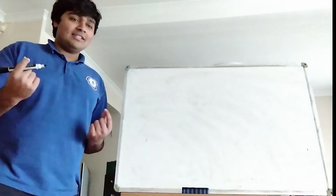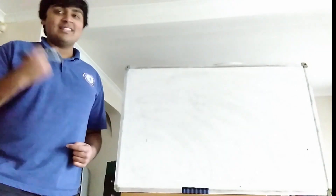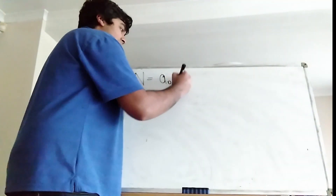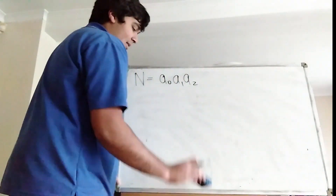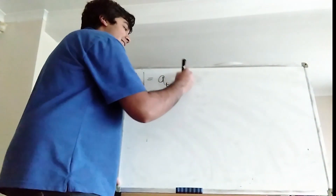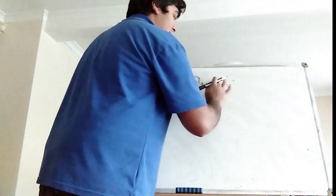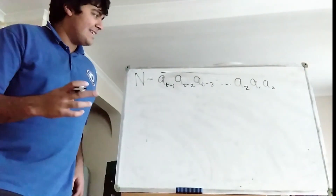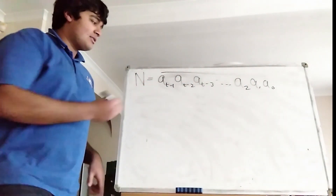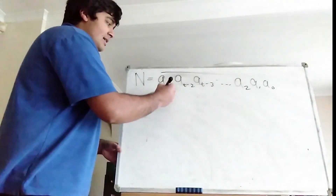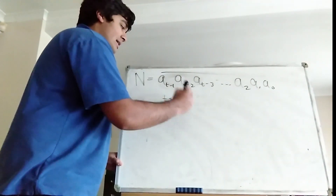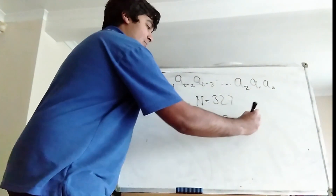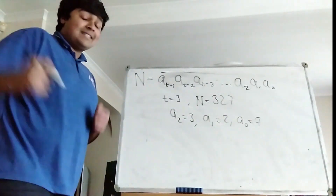Let's suppose N has t digits. If it's a single digit number then t equals 1, if it's a two digit number then t equals 2, and so on. So N is a t digit number, which we can write as: a_{t-1}, a_{t-2}, a_{t-3}, ..., a_2, a_1, a_0, where the bar notation means concatenation — just shoving the digits together. For example, if t equals 3 and N equals 327, then a_2 = 3, a_1 = 2, and a_0 = 7. Shoving those together gives 327, not 3 times 2 times 7 — it means concatenation, not multiplication.